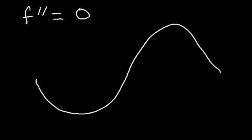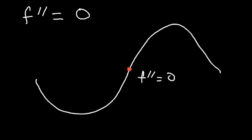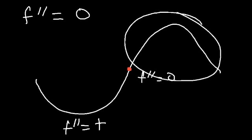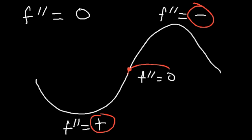A good example of an inflection point is right here. At that point, the second derivative is equal to zero. In this region it's concave up — you can see the upward parabola shape — so the second derivative is positive. In this other region it's concave down, so the second derivative is negative. In order to change from positive to negative it must cross zero, and right in the middle is the inflection point where the concavity changes from concave up to concave down.